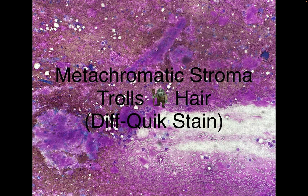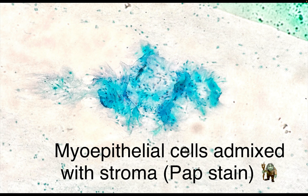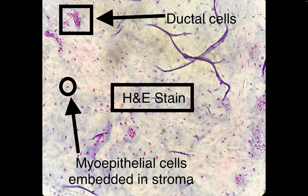Not only that, but you'll have two other elements including myoepithelial cells, which are embedded in the stroma. If they were organized around the stroma, you would want to think about adenoid cystic carcinoma. You also have ductal cells. On this PAP stain, you can see the myoepithelial cells enmeshed in that fibromyxillary metachromatic stroma. On H&E, the stroma looks more chondromyxoid, with myoepithelial cells embedded in the stroma as well as ductal or epithelial cells.